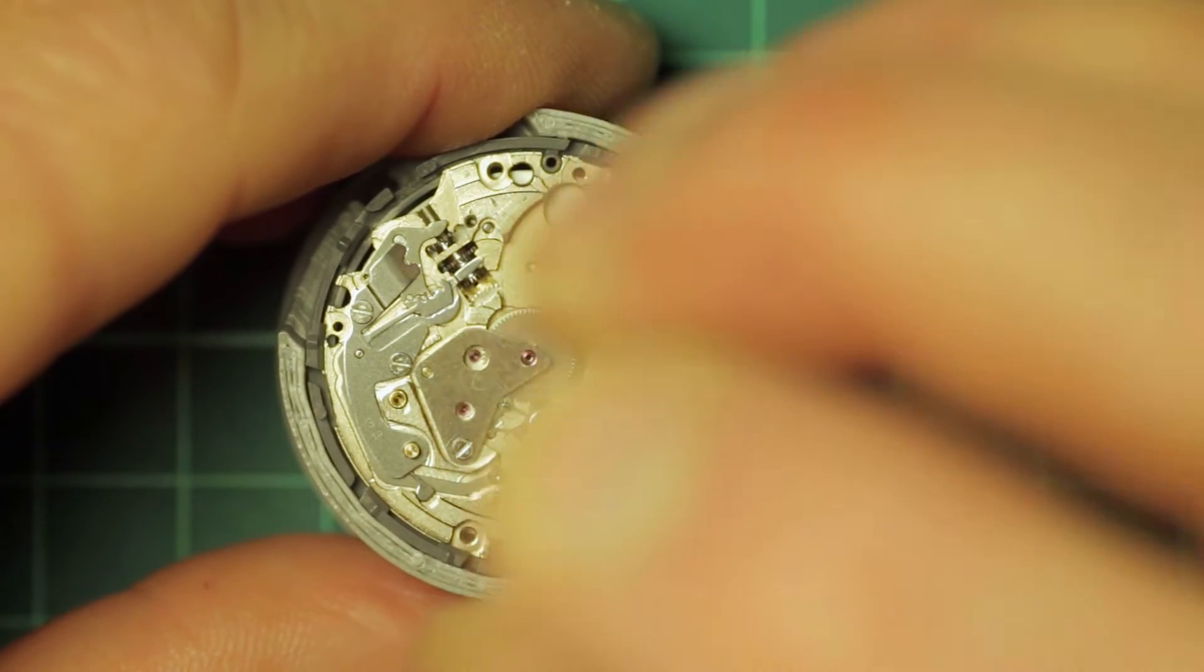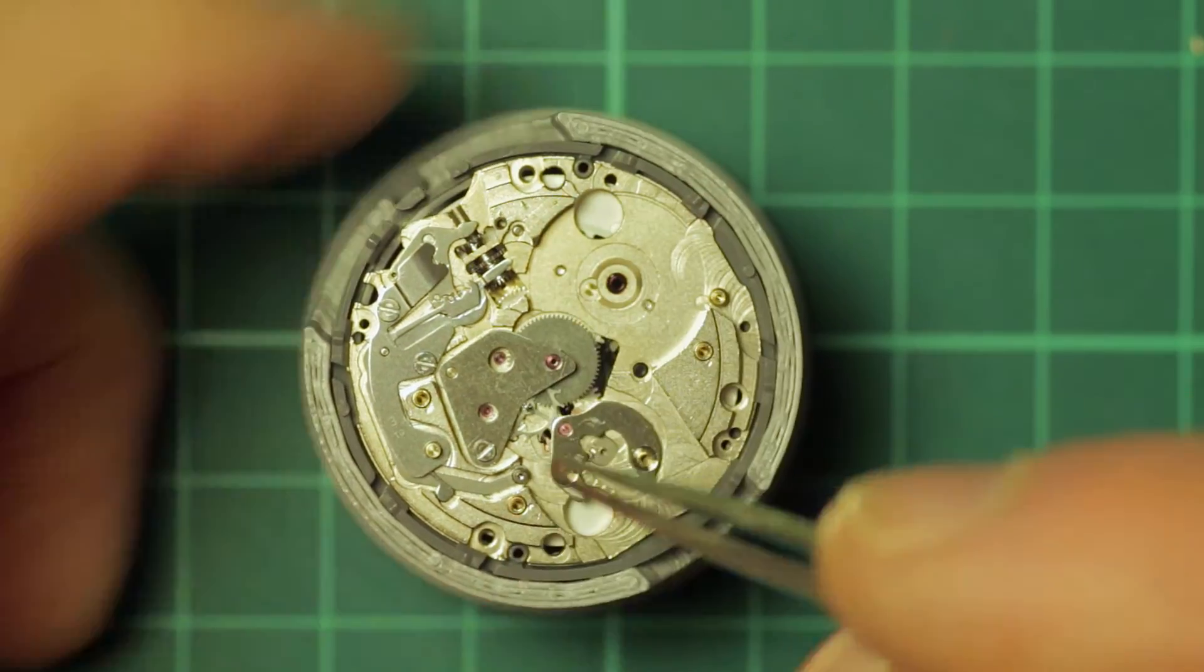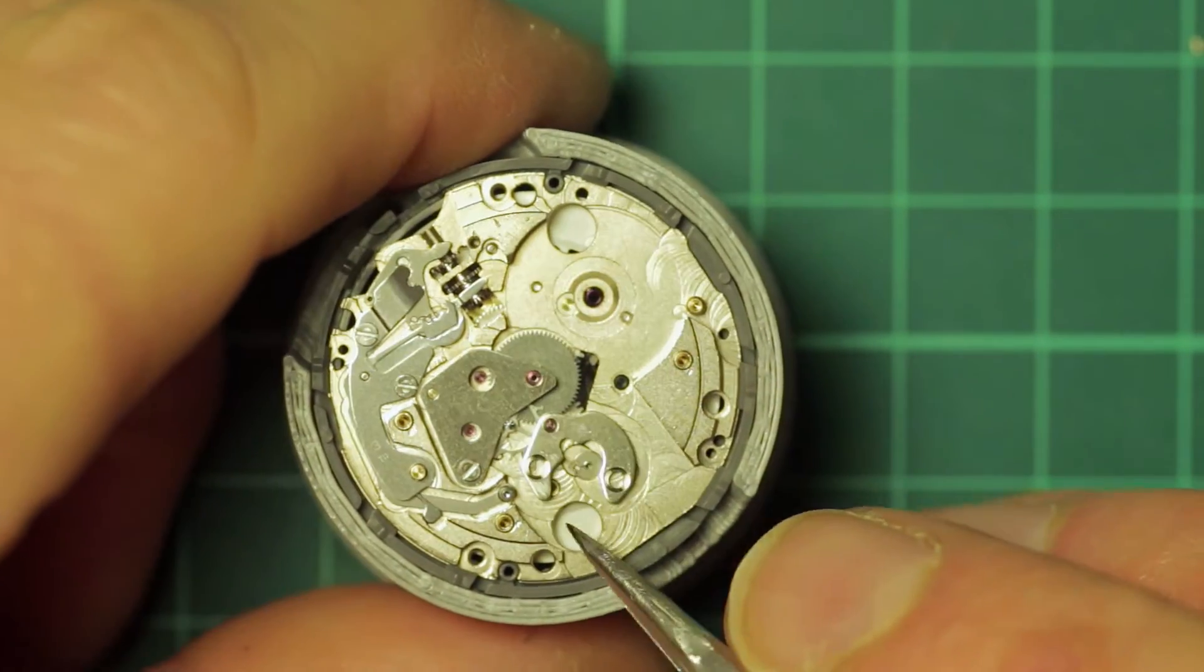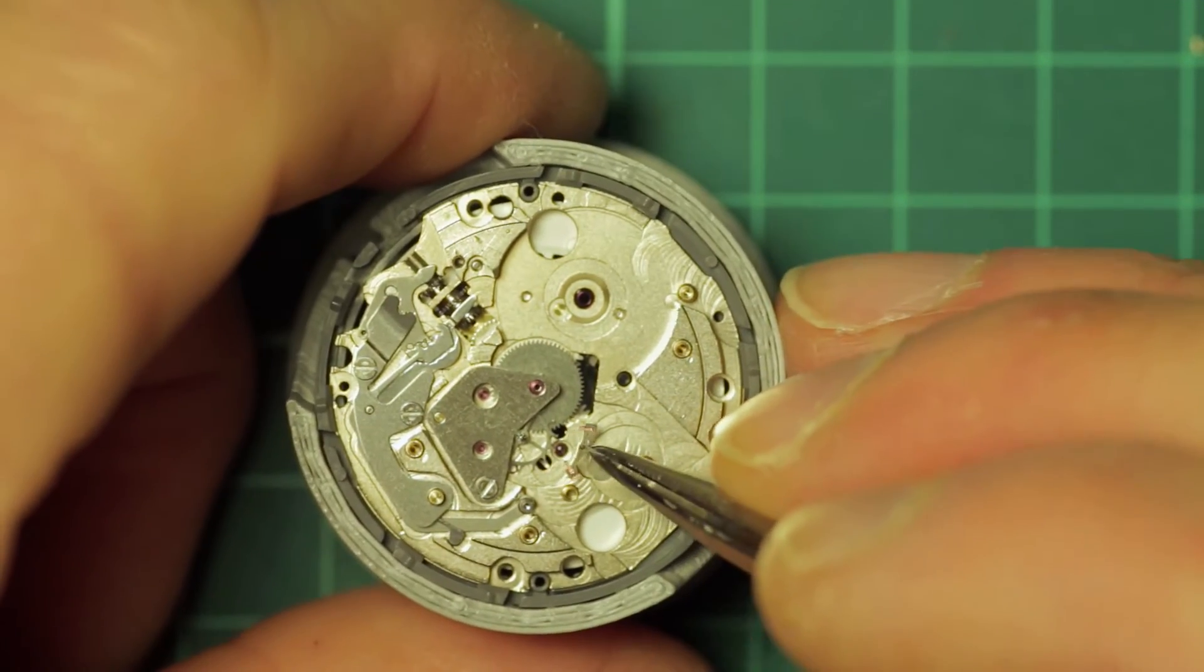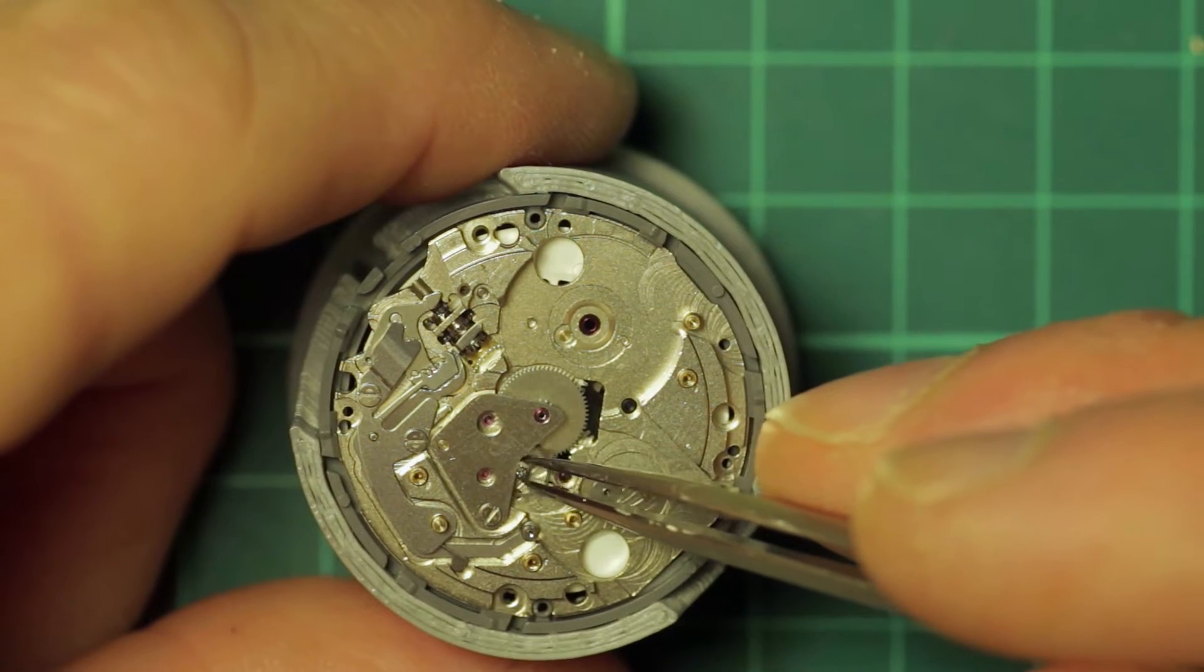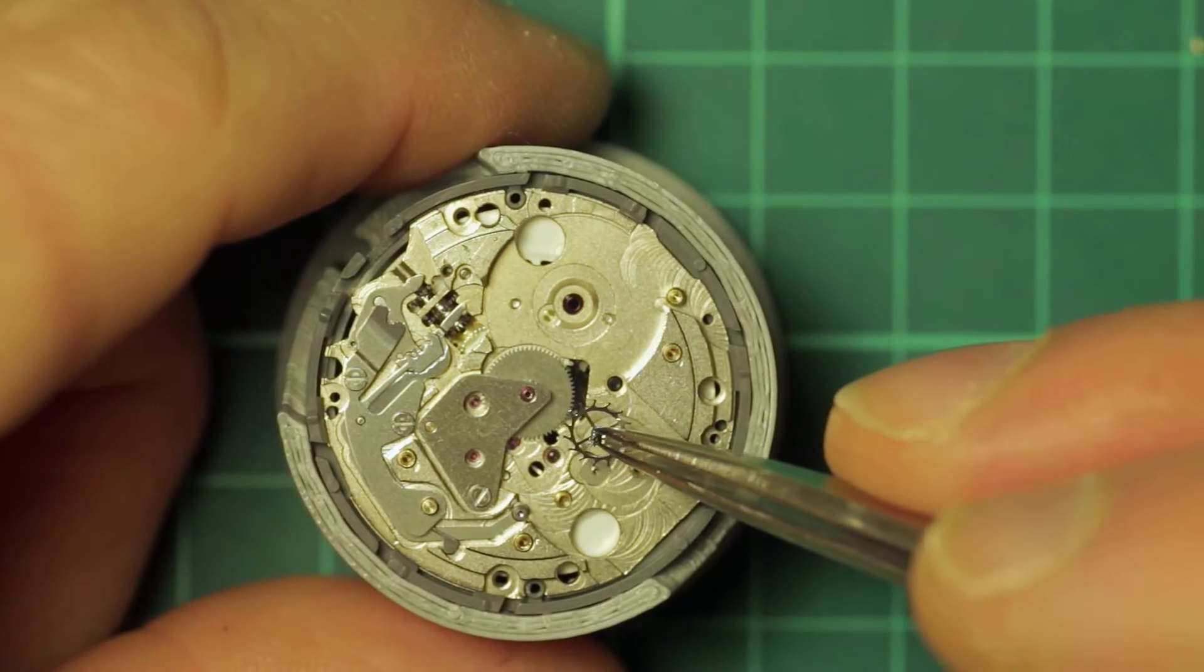Before removing the centre wheel bridge and the centre wheel, here I remove the balance bridge, sorry the pallet fork bridge and the pallet fork. Then the escape wheel.